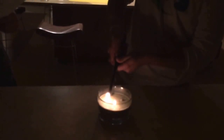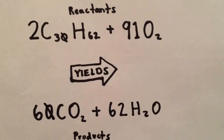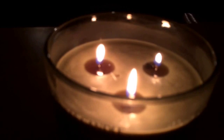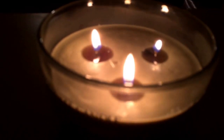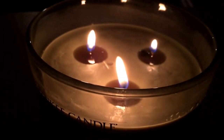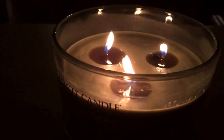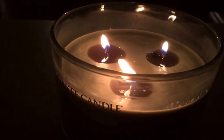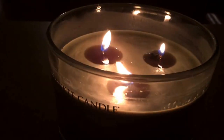Our chemical reaction is burning a candle, and here's the chemical equation. The reactants in the chemical equation are carbon, oxygen, and hydrogen, and the products are carbon dioxide and water. This is a combustion reaction — we determine the type of reaction by analyzing the equation.